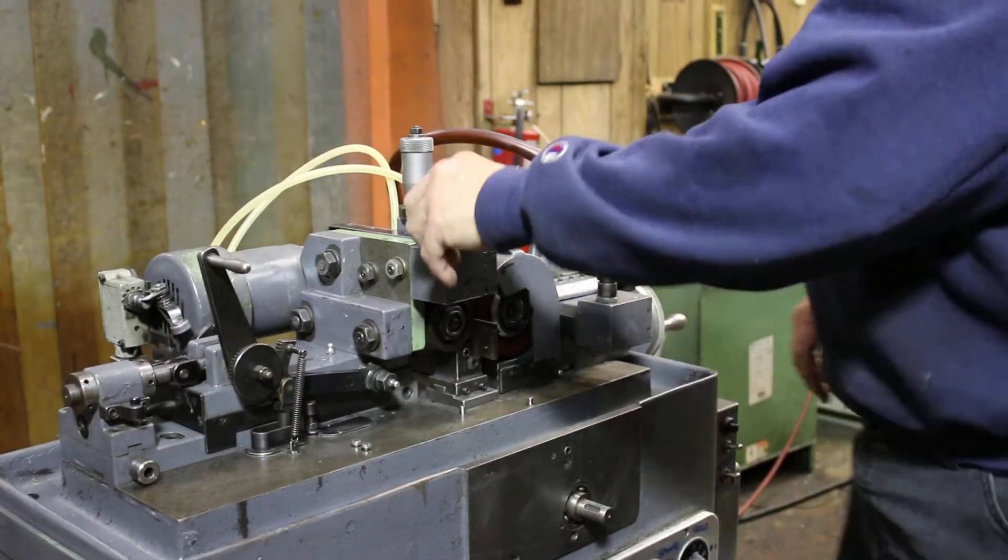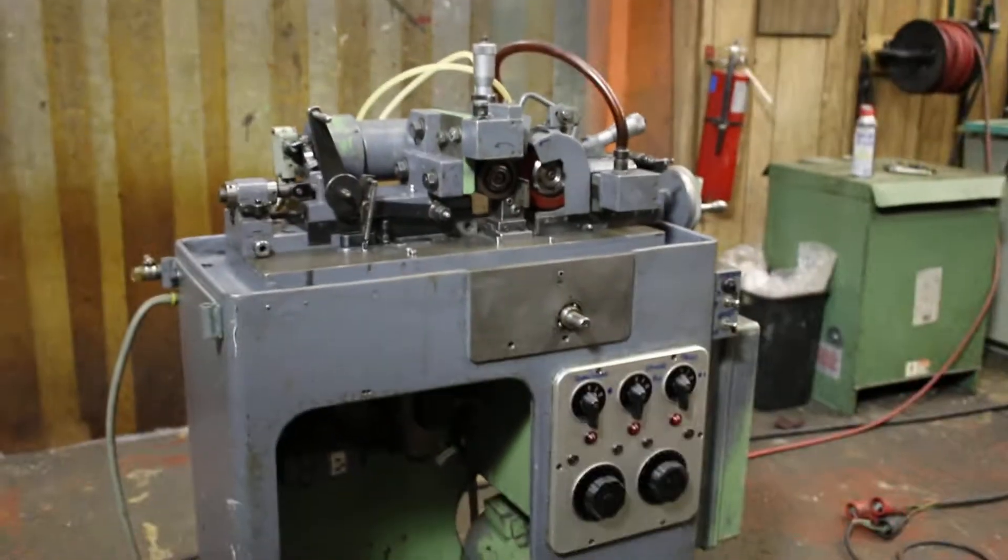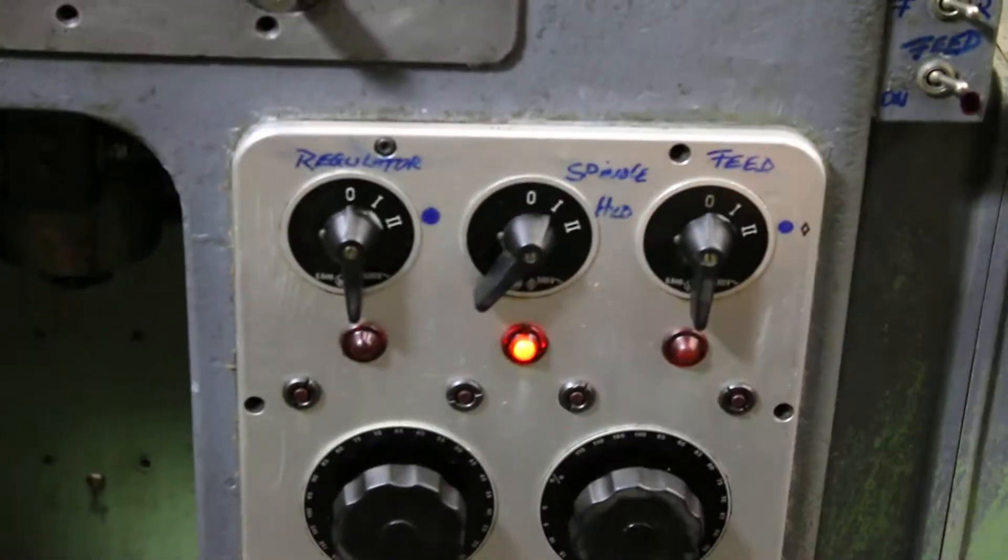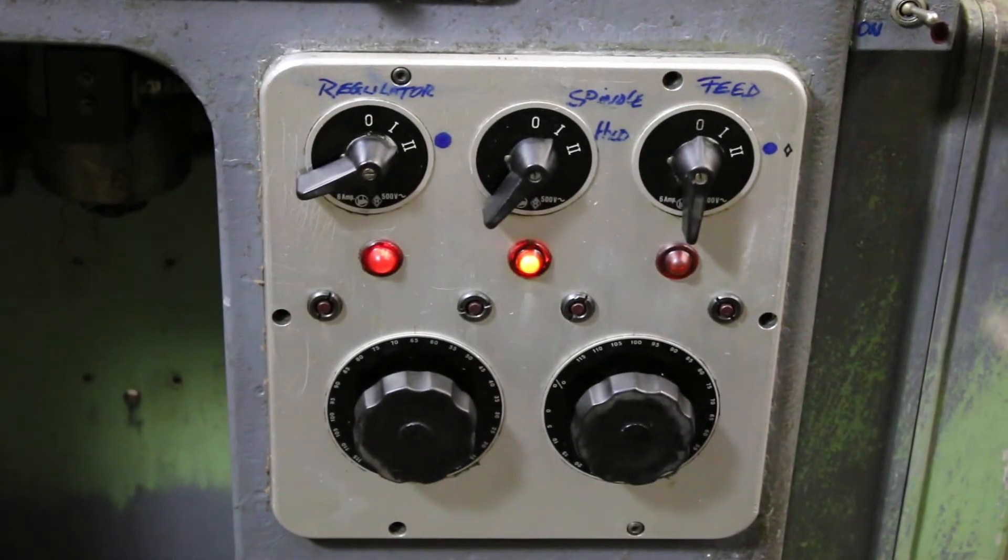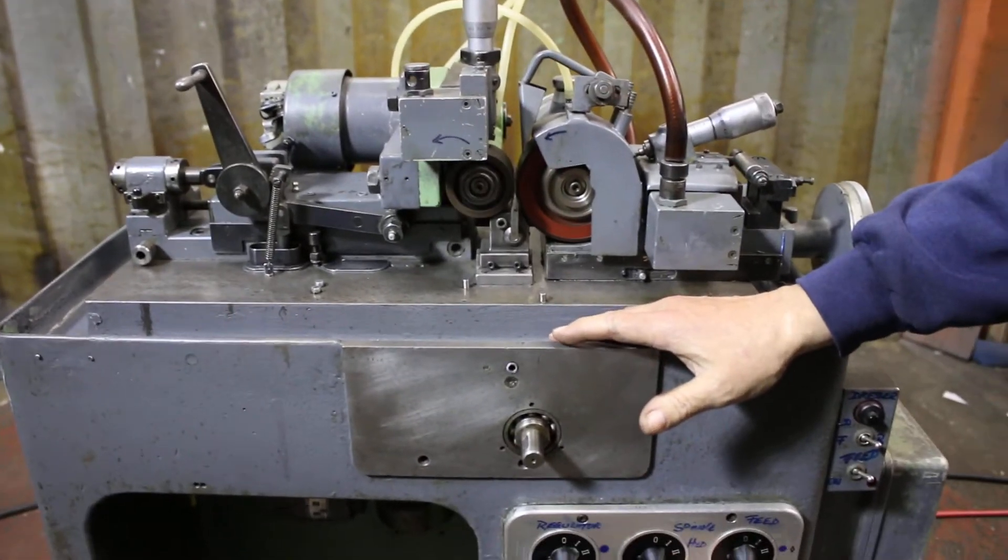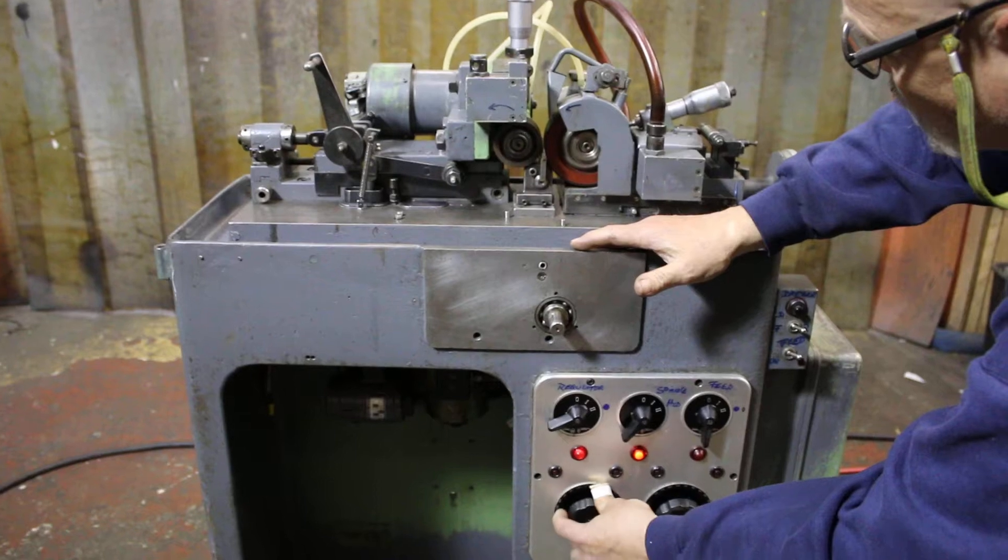So let's go ahead and start this up. This is some stuff written on here because you have to really pay attention. We're going to start the spindle and the regulating wheel. Now the regulating wheel is a variable speed control. You can go from very slow to very fast for dressing.